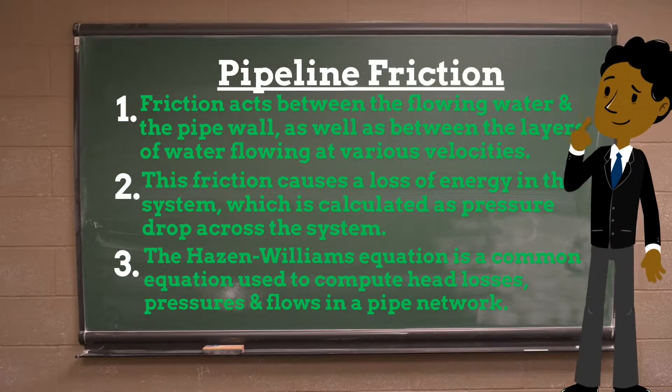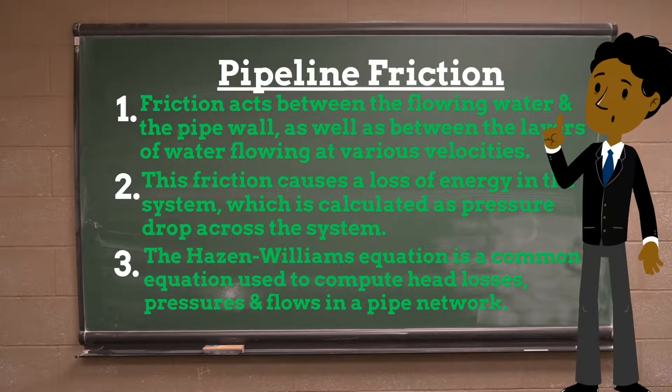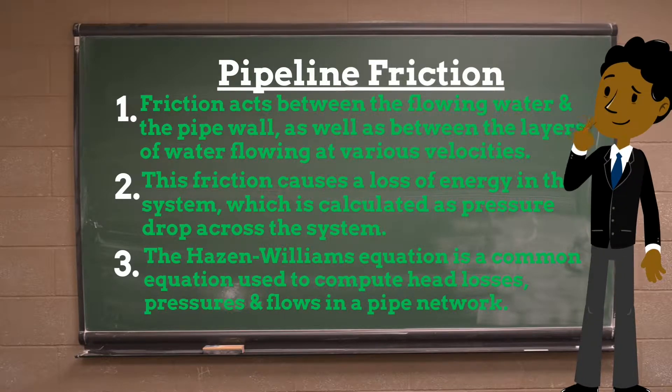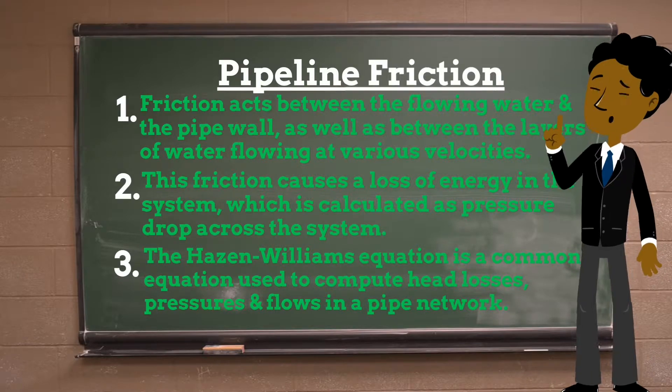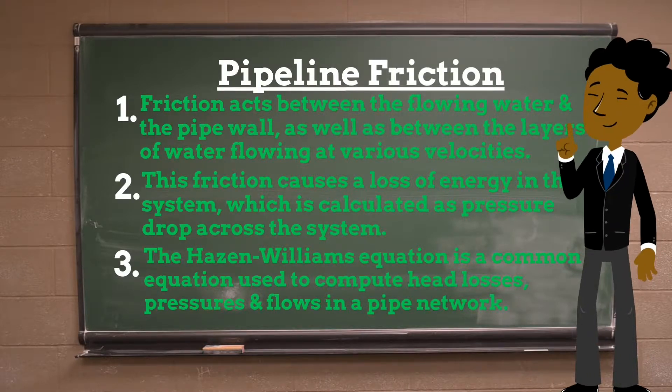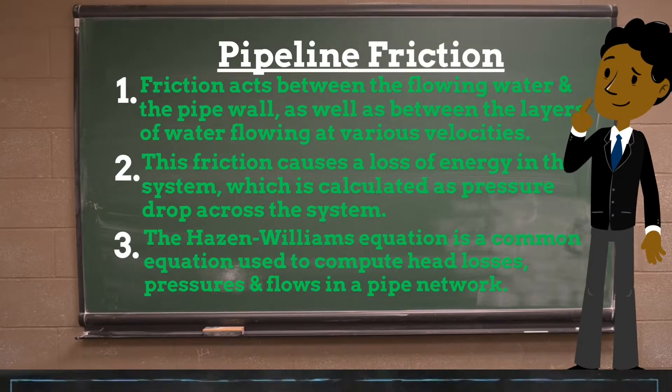To be able to design new water distribution pipelines or sewage force mains or to analyze existing pipe networks, it is necessary to be able to calculate head losses, pressures, and flows throughout the system. There are several formulas in hydraulics to do this, but the Hazen-Williams equation is one of the most commonly used.